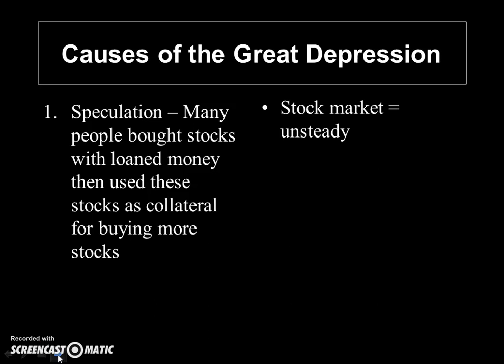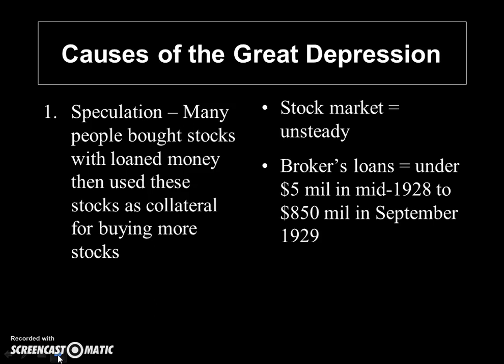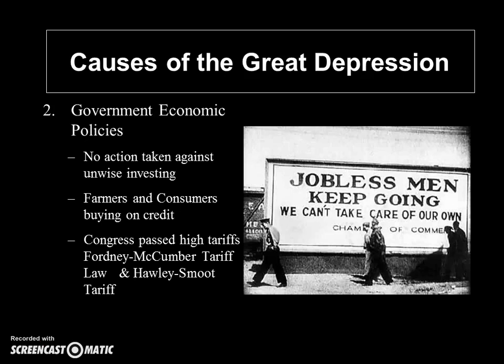Brokers' loans were under $5 million in mid-1928. By mid-September of 1929, brokers were loaning $850 million to people to buy stocks. You also had government and economic policies which were laissez-faire — meaning hands-off policies — meaning they weren't taking any action against these unwise investing practices. Farmers and consumers were buying on credit, and Congress passed some really high tariffs to try to protect certain industries here in the United States, so people couldn't export their goods or buy cheaper imports.